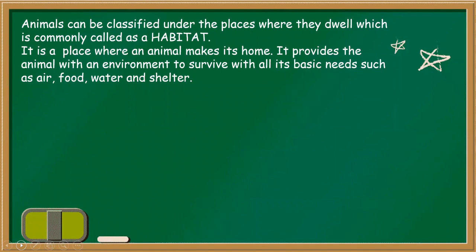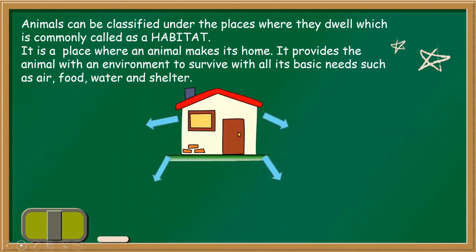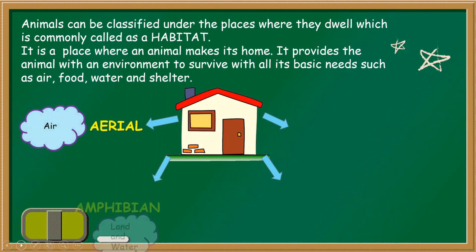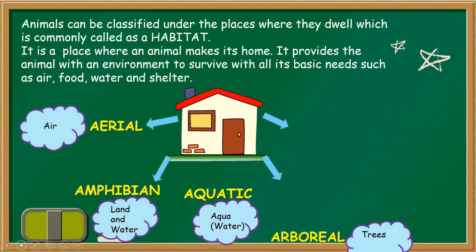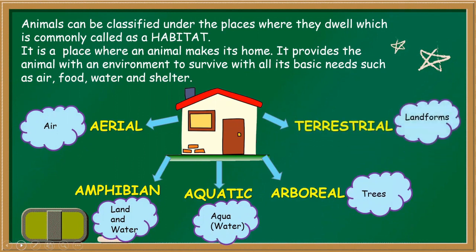Let's have a quick recap. Animals can be classified under the places where they dwell, which is commonly called a habitat — a place where an animal makes its home, providing the environment to survive with all it needs. It can be aerial, amphibian, aquatic, arboreal, and terrestrial. Aerial animals love to live in the air; amphibians prefer land and water; aquatic animals live in water; arboreal animals prefer trees; and terrestrial animals live on various landforms including deserts, plains, wetlands, and grasslands.